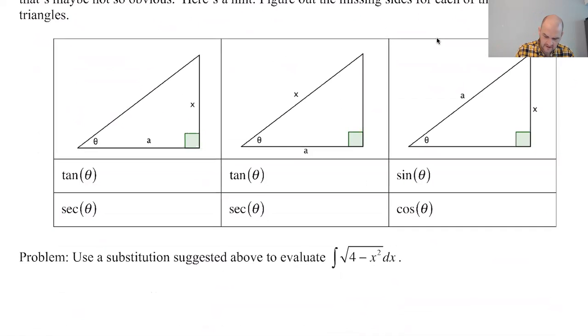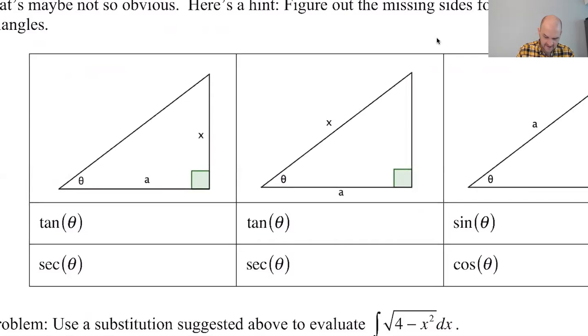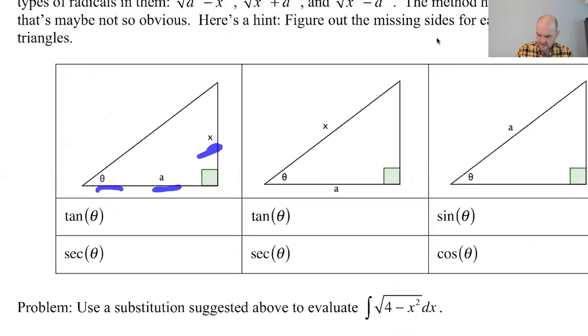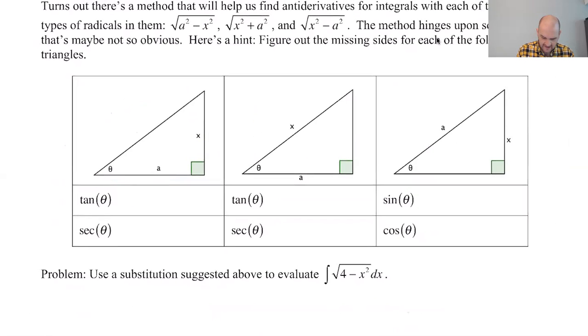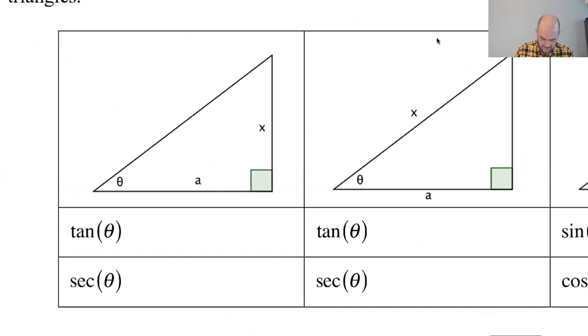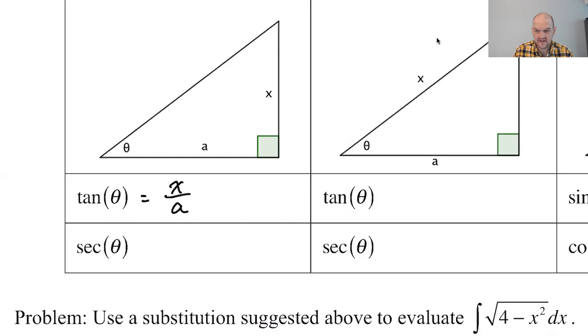So here are kind of the basic ideas. If we have this triangle where we have an angle of theta, we have a side a and side x. You'll notice in each of these triangles, by the way, x is either kind of like the vertical side or the hypotenuse. I recommend that. So if we look at this, tangent is just going to be opposite over adjacent, so it's x over a, or x is equal to a times tangent of theta. That's going to be important.